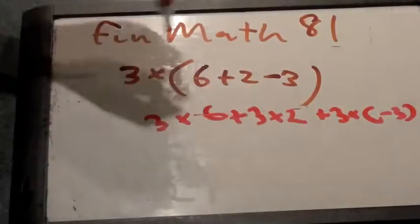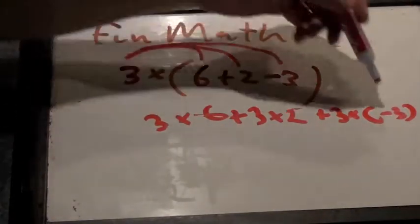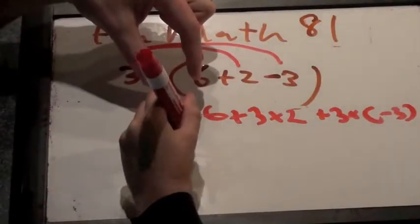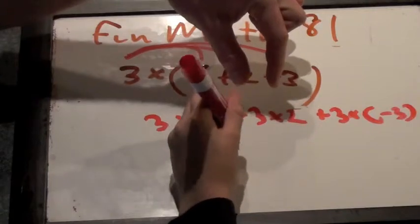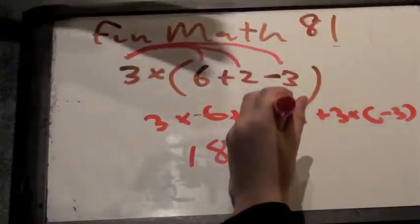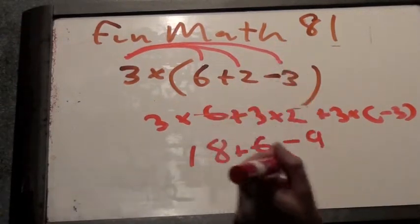3 times 6. Can you see this? 3 times 6, 3 times 2, and 3 times minus 3. And what is 3 times 6? It's 18. What is 3 times 2? 3 times 2 is 6. Okay, so we get 18 plus 6. And what is 3 times minus 3? It's minus 9. So we get 18 plus 6 minus 9.